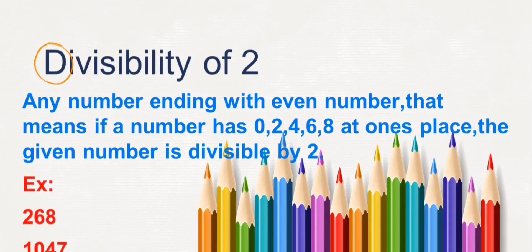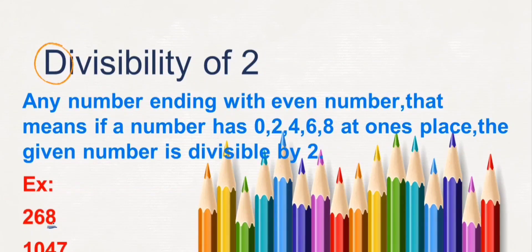Look at an example. Here, in 268, at the ones place there is 8. If a number is ending with an even number, that means the number can be divided by 2. So 268 is divisible by 2. It is divisible by 2 as it has an even number at the ones place.